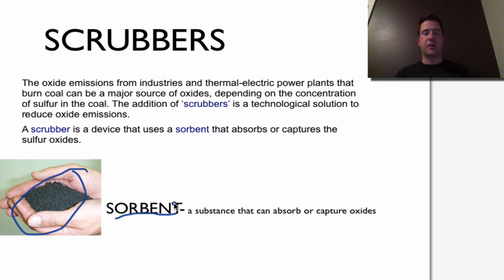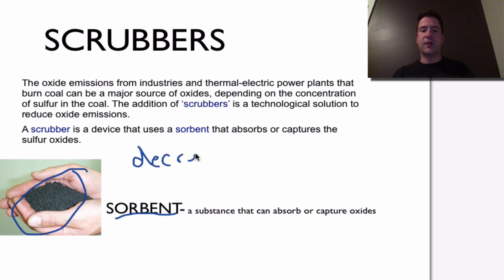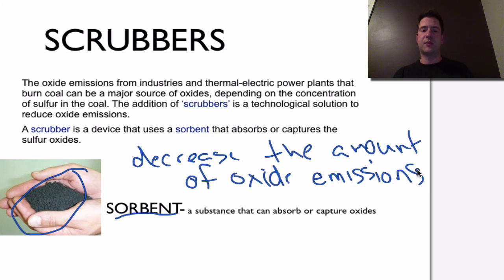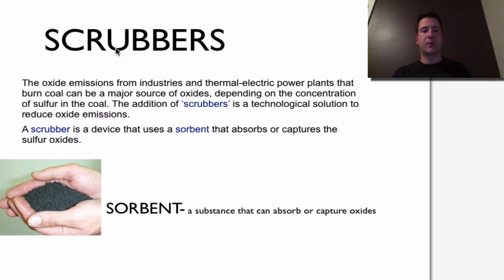Scrubbers are going to severely decrease the number of oxide emissions — that's what you want to know about scrubbers. As we go through this screencast, we'll talk about one particular system called the COBRA system, and discuss the process by which scrubbers actually function.